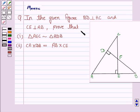It says in the given figure, BD is perpendicular to AC and CE is perpendicular to AB. Prove that triangle AEC is similar to triangle ADB and CA into DB is equal to AB into CE.